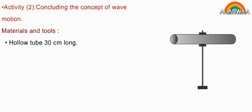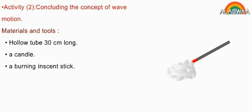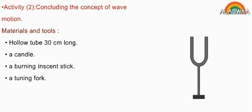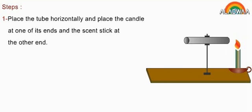Activity 2: Concluding the concept of wave motion. Materials and tools: a hollow tube 30 cm long, a candle, a burning scent stick, and a tuning fork. Steps: place the tube horizontally and place the candle at one of its ends and the scent stick at the other end.